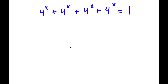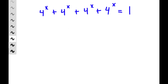So in this problem, I have 4 to the power of x plus 4 to the power of x plus 4 to the power of x plus 4 to the power of x is equal to 1. I want to find the value of x.